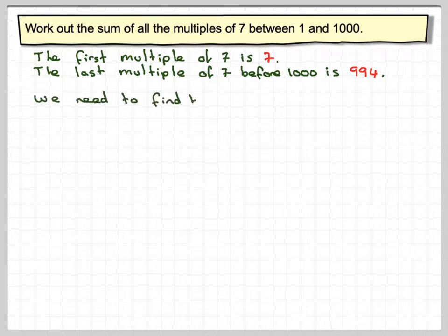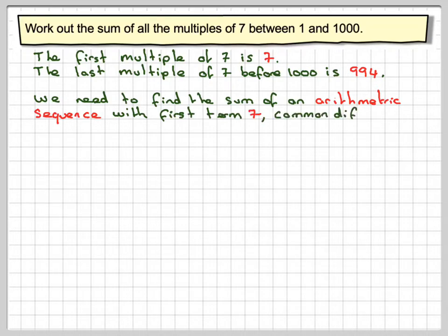So we need to find the sum of an arithmetic sequence with first term 7, common difference 7, and last term 994.